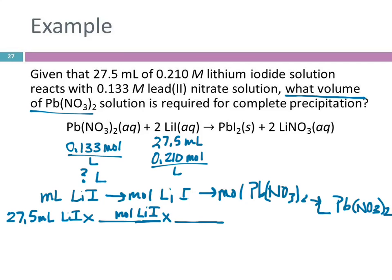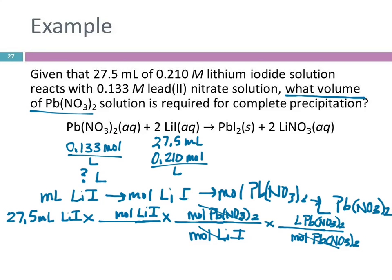So, this is LiI. Moles of LiI to moles of big messy one. Moles of Pb, I'll write it better this time, NO3)2. And from moles of that to liters of lead nitrate. So, previous unit comes to the denominator. This cancels that one. And moles of LiI cancels that one. And milliliters of LiI cancels that one.